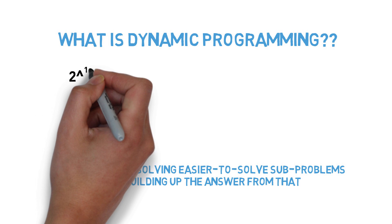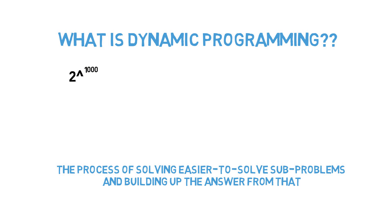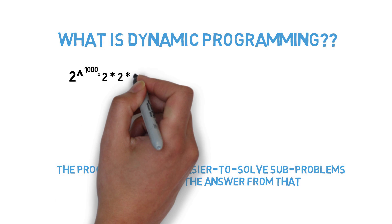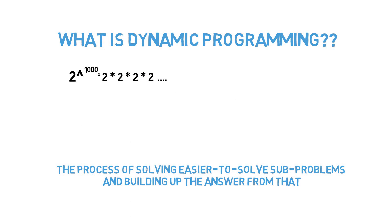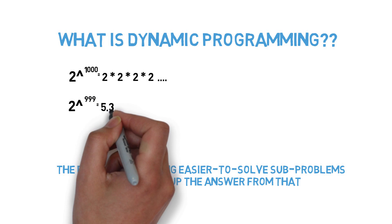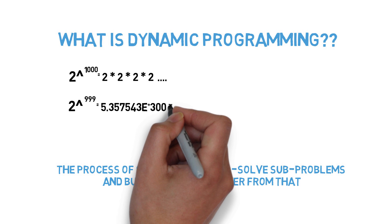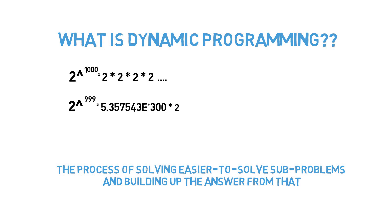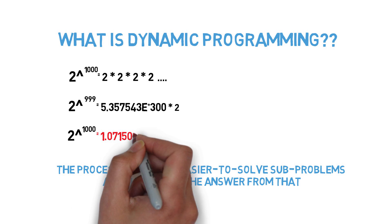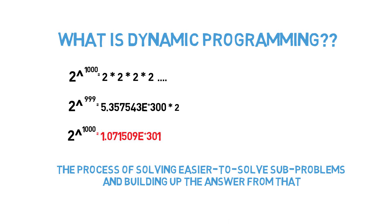Let's say someone asks what is two to the thousand. If you tried to compute two times two times two etc., it would take some time. But if they also give you the state of the subproblem two to the 999, all you must do is multiply two times that subproblem state. You're using the solution to the subproblem two to the 999 to find your answer. We can do the same thing with this coin question.